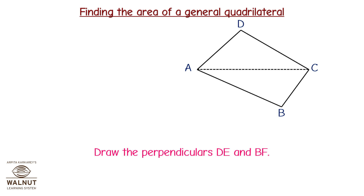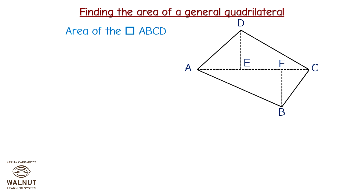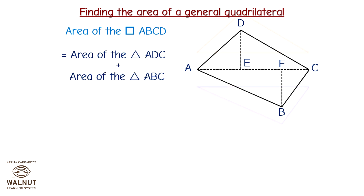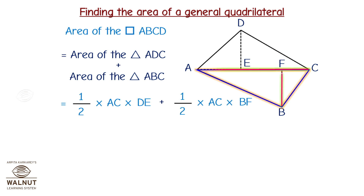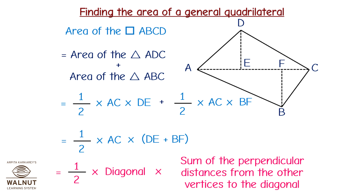Draw the perpendiculars DE and BF. Let's generalize the formula to find the area of a quadrilateral by using the area of the triangles. Area of quadrilateral ABCD equals area of triangle ADC plus area of triangle ABC, which equals half into AC into DE plus half into AC into BF, which equals half into AC into (DE plus BF). This equals half into the diagonal into the sum of the perpendicular distances from the other vertices to the diagonal.